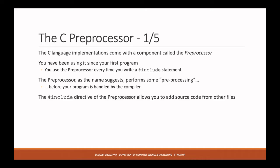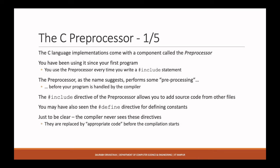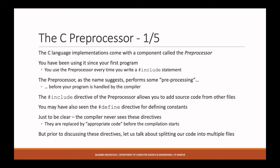The hash include directive of the preprocessor allows you to add source code from other files within your program. Similarly, you've probably also seen the hash define directive — we used it for defining the size of arrays. To be clear, all these preprocessor directives are not something the compiler sees directly. Before the compiler processes your code, these directives are replaced with some appropriate code.